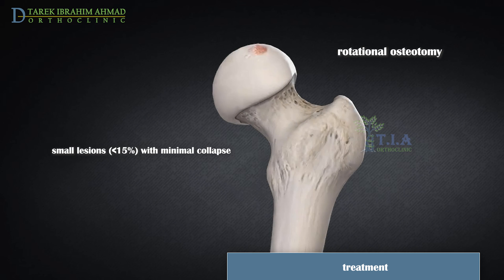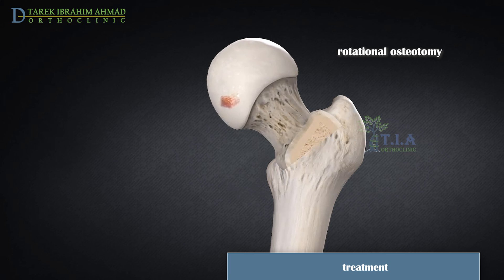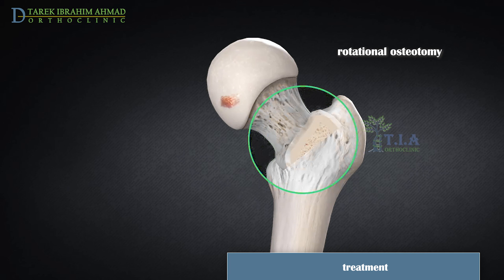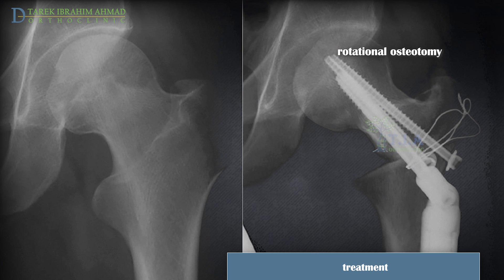Rotational osteotomy can be used in younger patients with a small lesion of less than 15% and minimal collapse. The goal is to redistribute the weight-bearing forces away from the area of necrosis. This includes intertrochanteric rotational osteotomy to shift the affected areas of the femoral head away from weight-bearing zones. The application of this procedure is limited because it is technically demanding and because of the subsequent difficulty converting osteotomies to total hip arthroplasty when needed.